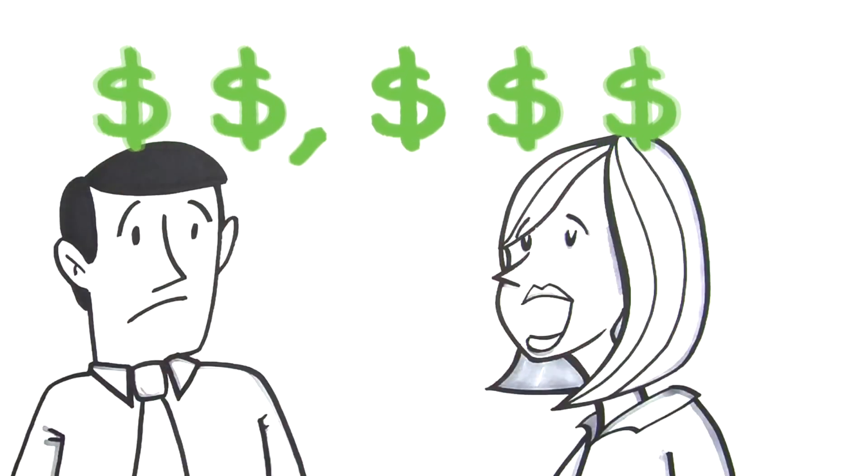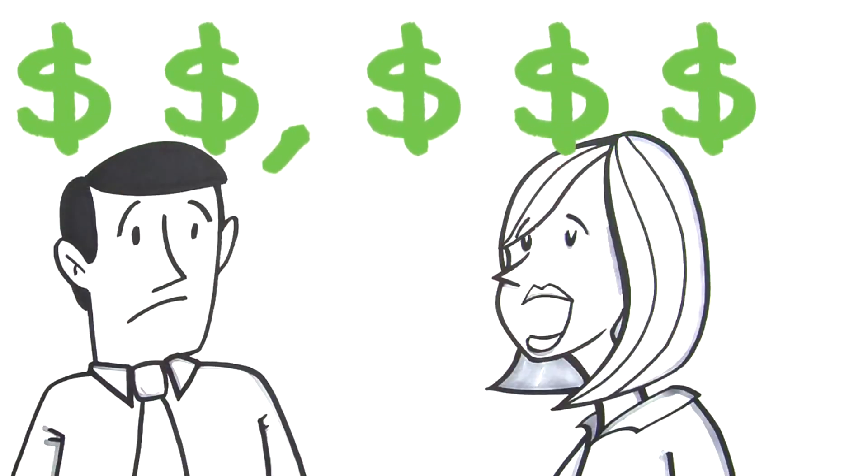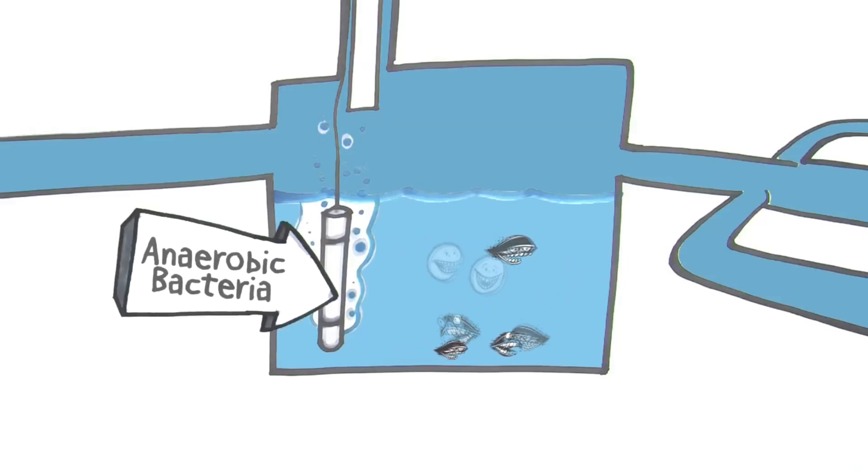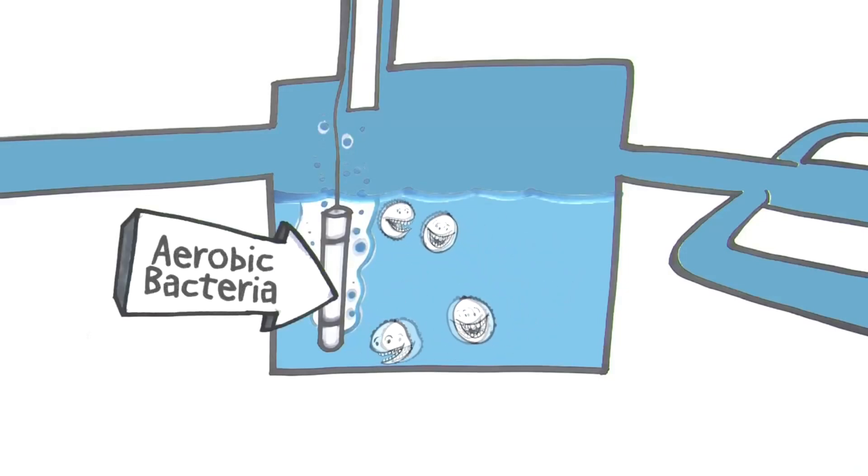Now, imagine if you could avoid this issue altogether, without having to shell out thousands of dollars for a replacement. This is where the conversion to an aerobic environment comes into play.